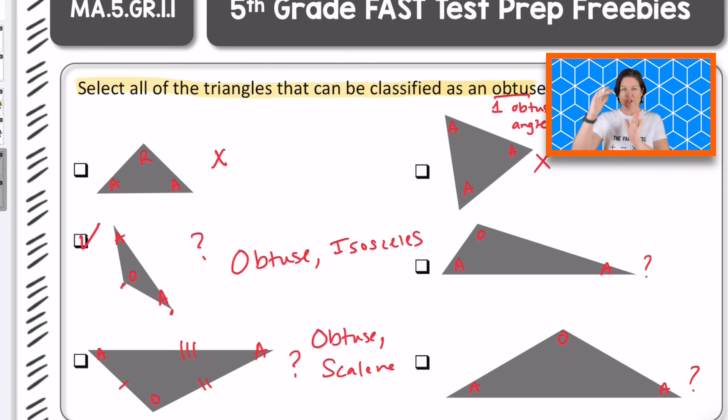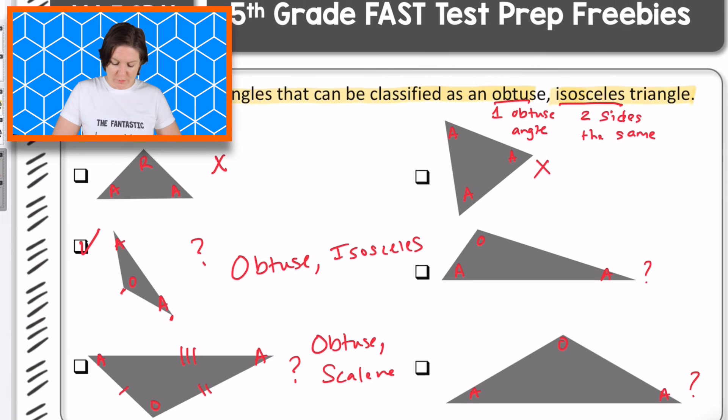This one is obtuse, but it's scalene because we have three different sides. Again, you could use your paper to measure it and then just line up that paper along the angles. For the other question mark, we do have an obtuse angle. And if you were to measure all the side lengths, you would see that we have again, three different side lengths. So that would be obtuse scalene. And this final one, these two sides are the same size. You can take your paper and measure it, your scratch paper, and then this one would be the side that is not the same. So this would be obtuse and isosceles.